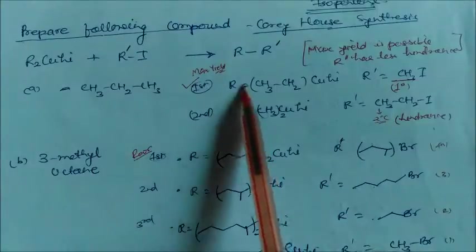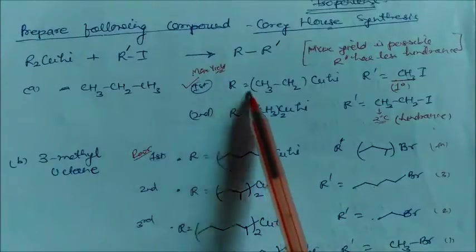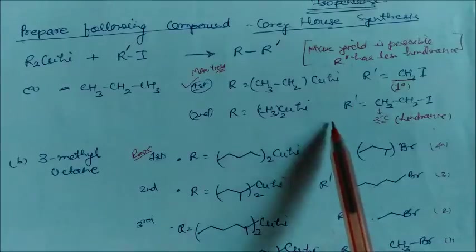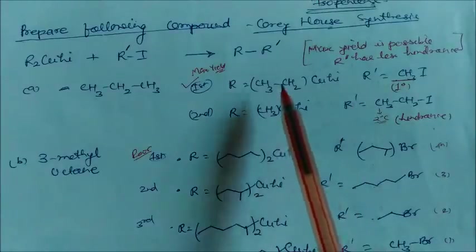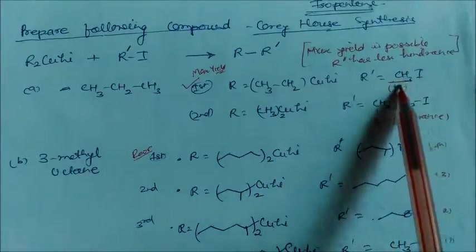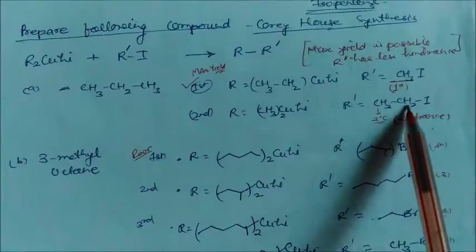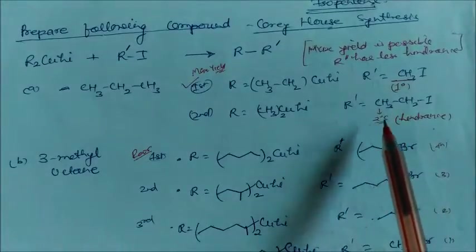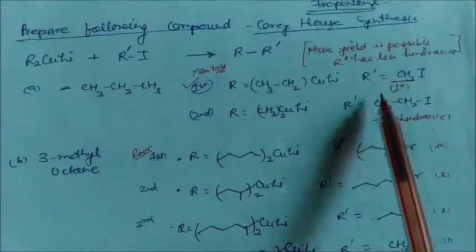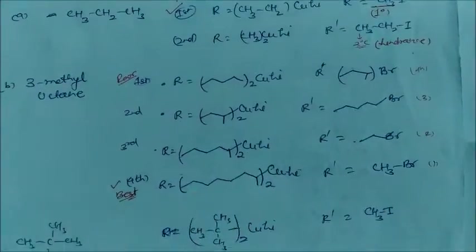This is the basic principle: when we can get maximum product and when minimum product out of these two reactions. In one case there is minimum hindrance, and in the other case there is maximum hindrance because the secondary alkane is attached with the primary carbon. The less hindered case gives maximum yield and the more hindered case gives less yield.